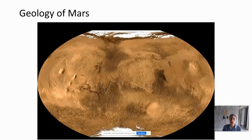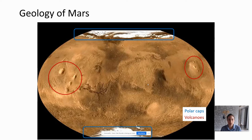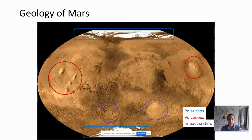Many of you may be familiar with the geology of Earth, but not necessarily with the geology of Mars. Today we can see polar caps in both the north and south poles, made up of both water and CO2 ice. We see large, inactive volcanoes — the largest, Olympus Mons, is about the size of the state of Arizona and is the largest volcano in the solar system. We see impact craters especially in the older southern half of Mars, including two of the largest: Hellas and Argyre, circled here.